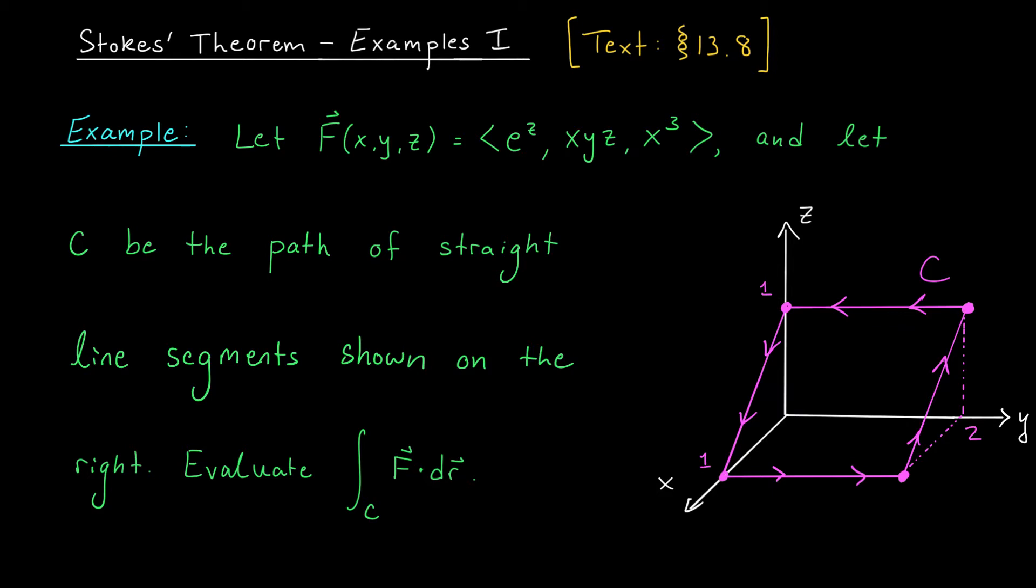We'd like to evaluate the line integral of our vector field F along the path C. Now at a glance, this problem actually looks pretty involved. After all, our curve C is made up of four straight line segments. So does this mean we have to compute four separate line integrals and then add the results? Well, maybe. We were able to avoid this in the past using Green's theorem, but that result doesn't apply here. Green's theorem only works in R² when we're dealing with curves in the x,y plane.